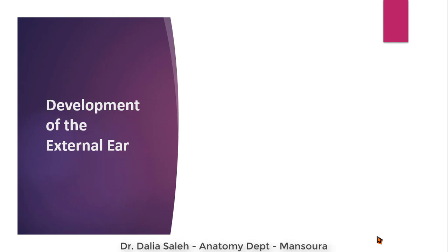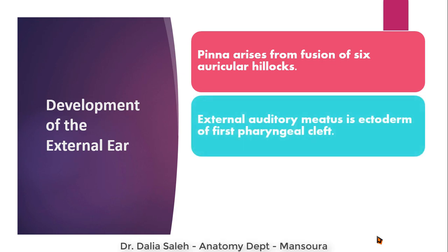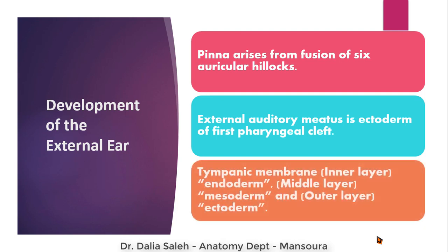To summarize the development of the external ear: the ear pinna arises from the fusion of six auricular hillocks. The external auditory meatus is ectodermal in origin, from the first pharyngeal cleft. The tympanic membrane or eardrum is made of three layers — inner, middle, and outer. The inner layer is endodermal in origin, the outer layer is ectodermal in origin, while the middle layer is mesodermal in origin.